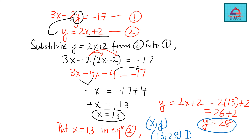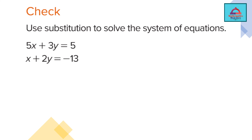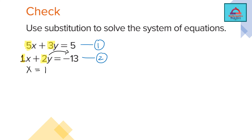So the answer is B. Let's look at one more question to make you more comfortable with the substitution method. You are given two equations, number 1 and number 2. Think which equation is easier to substitute. Looking at the coefficients: 5, 3, 1, and 2. The coefficient of 1 is the easiest to work with, so we solve equation 2 for x, giving x = 13 − 2y, and substitute this into equation 1.